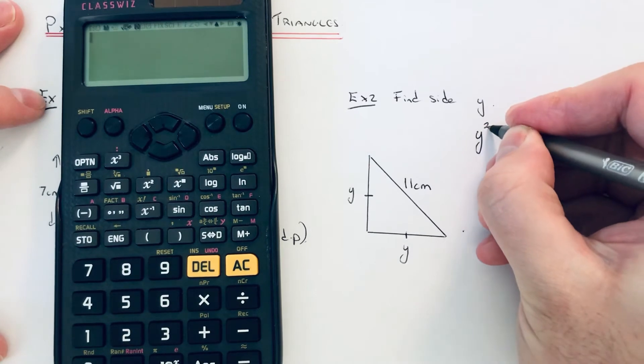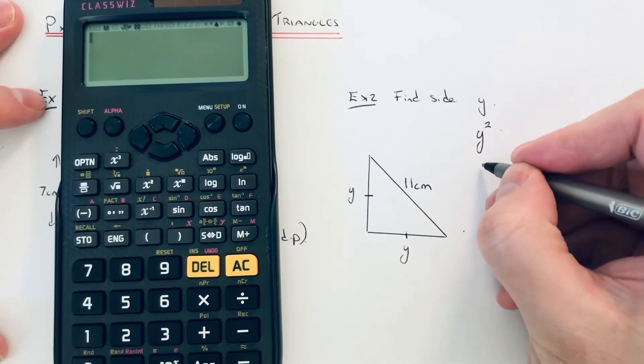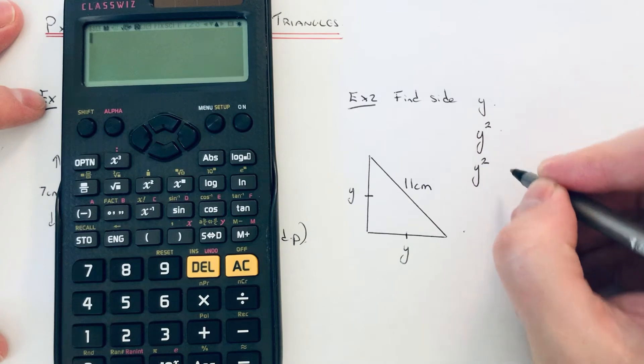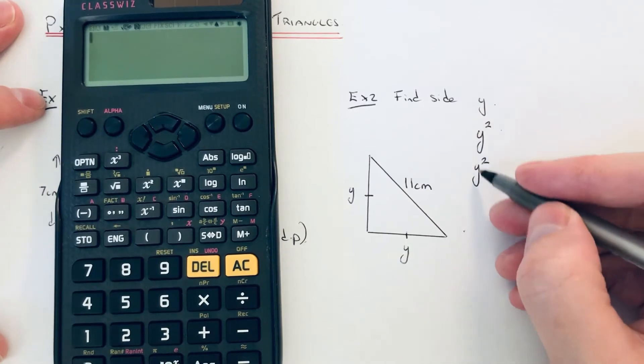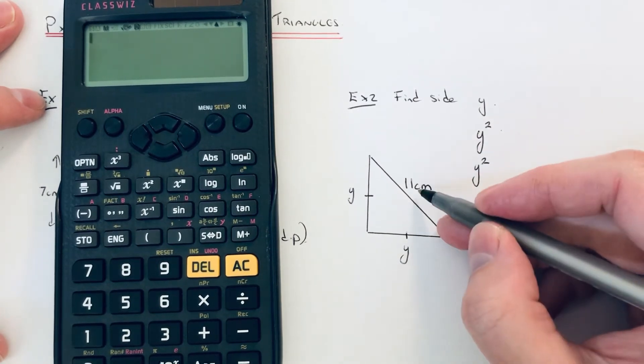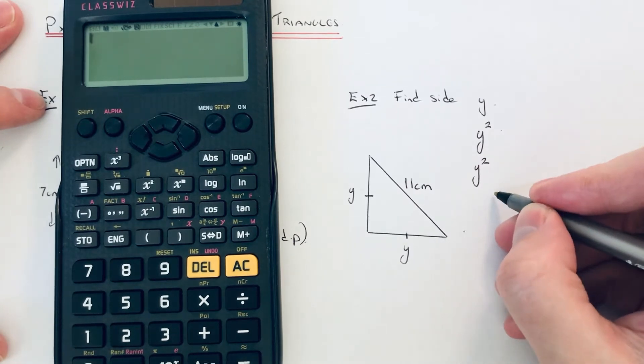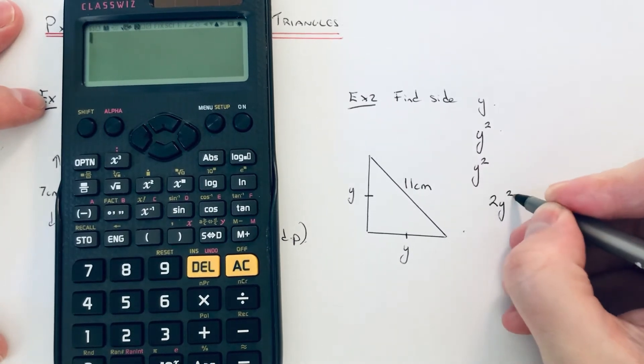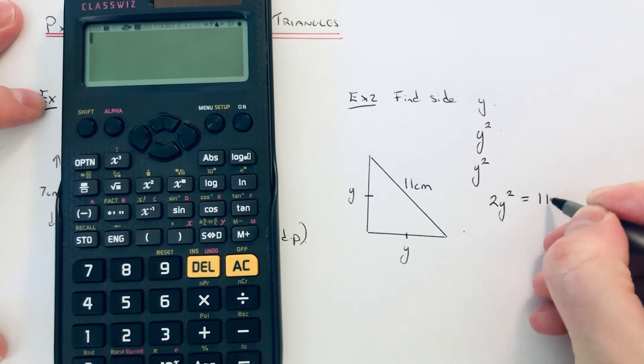We square y which is y squared, we square the other which is y squared. Now if we add these together, that will be equal to 11 squared. So 2y² will be equal to 11 squared. 11 squared is 121.